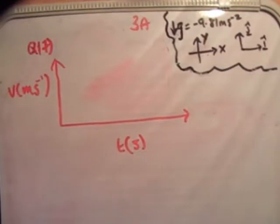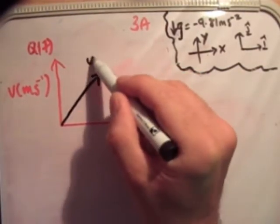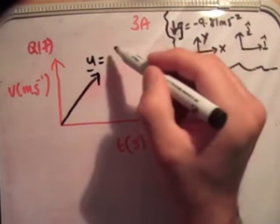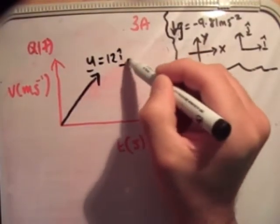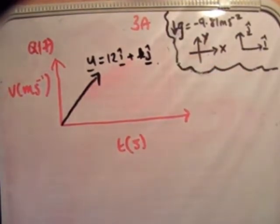So let's sketch the motion. We know that it's projected from a horizontal plane at initial velocity u is equal to 12i hat plus kj hat. And we know of course that u is a resultant vector, clearly, because it has two components.